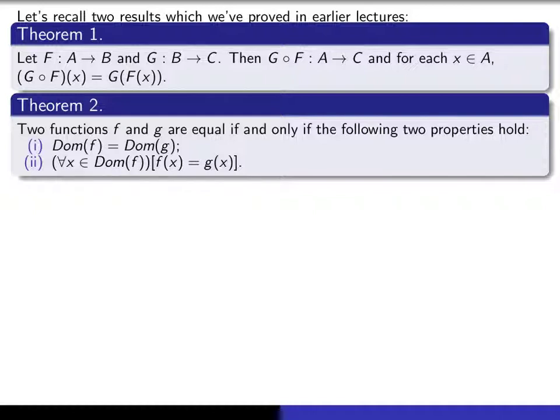The other theorem tells us how we can know when two functions are equal. So they're equal if and only if they have the same domains, and for every x in that common domain, the values of the function agree. So these were both results that we saw in earlier lectures.